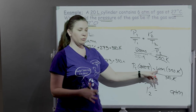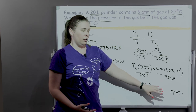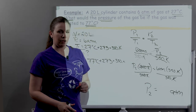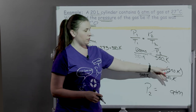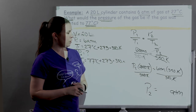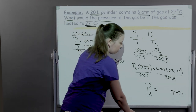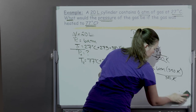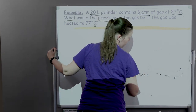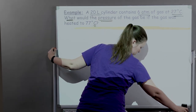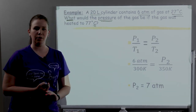Now doing the multiplication: 6 times 350 divided by 300. But notice these have different significant figures — 6 atm only has one sig fig, whereas our temperatures both have three sig figs. Going by the least number of sig figs, the answer should only have one. So what is my pressure in atm to one significant figure? It should be 7 atm. Final pressure: 7 atm. Being careful about significant figures and unit conversions.